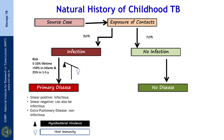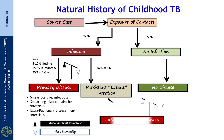Those who develop the disease after an infection usually will develop a primary disease, which can be either smear positive, smear negative, or an extra-pulmonary disease. Those who do not immediately develop a disease will have a persistent latent infection, which can later have reactivation disease depending on the imbalance between mycobacterium virulence and host immunity. Children are therefore good candidates for chemoprophylaxis because they have a very high risk of developing disease after infection.